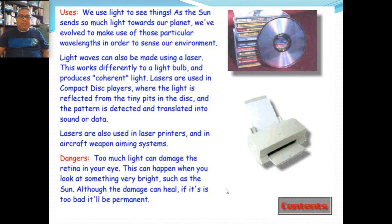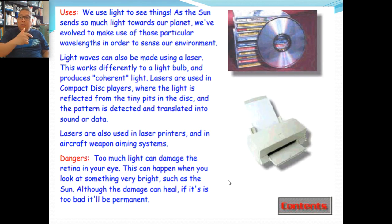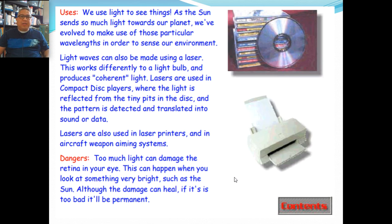So the danger — too much light can damage the retina of your eye. This can happen when you look at something very bright. That's why your cell phone should be set on a lower brightness if you're using it for a long time, or try to remove the blue light, because according to studies blue light is actually more damaging to your eyes.